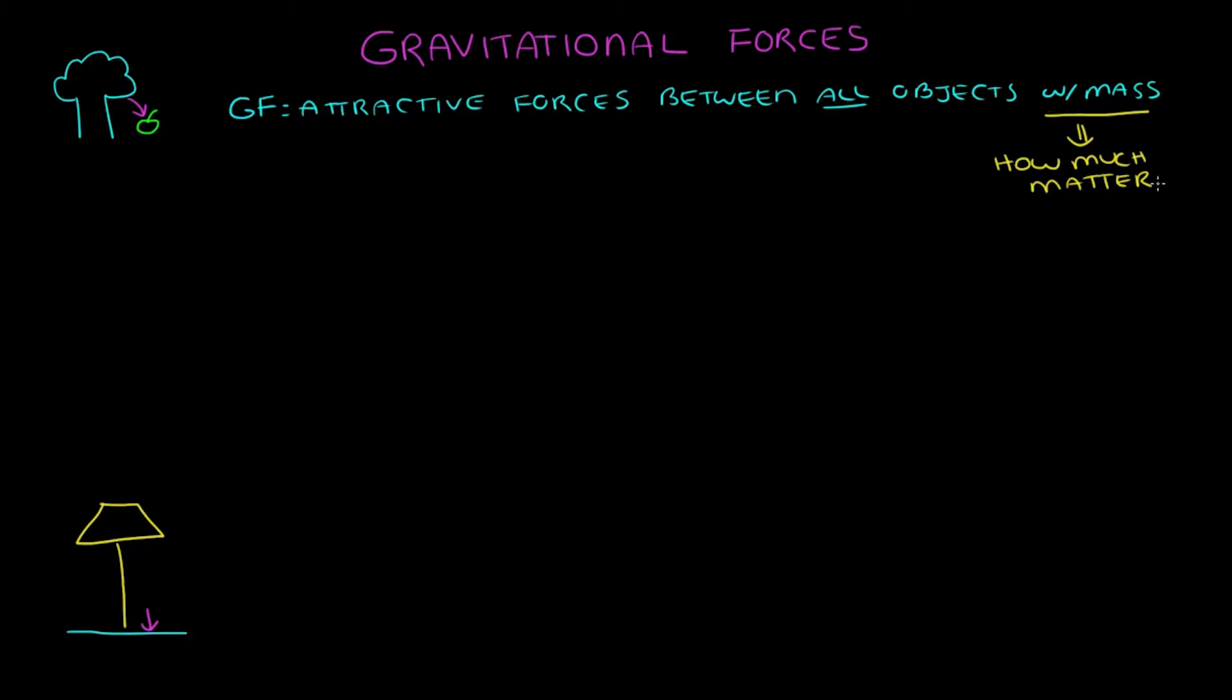The amount of gravitational force between two objects will depend on two things. The masses of the two objects and the distance between them. The mass of each object is proportional to the gravitational force. This means that the more mass an object has, the stronger its gravitational force.